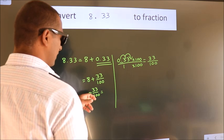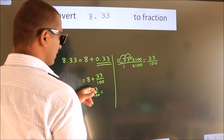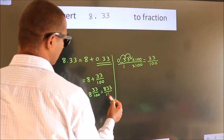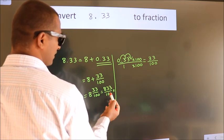8 times 100 is 800. 800 plus 33 is 833. So 833 by 100 is our fraction.